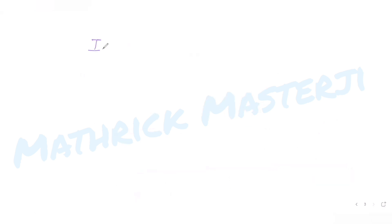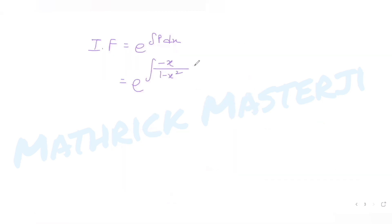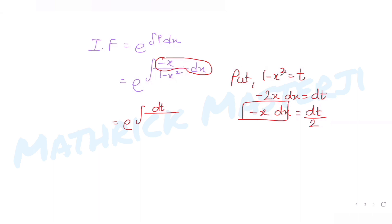The integrating factor is e^(∫P dx) = e^(∫ -x/(1 - x²) dx). To evaluate this, I substitute t = 1 - x², so -2x dx = dt, meaning -x dx = dt/2. The integral becomes e^(∫ (dt/2) / t) = e^((1/2) ∫ dt/t) = e^((1/2) ln t).